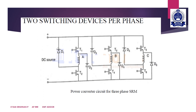Usually T1, T3, and T5 are turned on and off by signals obtained from a rotor position sensor. The period of conduction is controlled by a suitable circuit. T2, T4, and T6 are operated by chopping frequency signals. By controlling these switches we can control the supply through the coils of the switched reluctance motor.